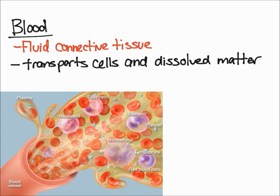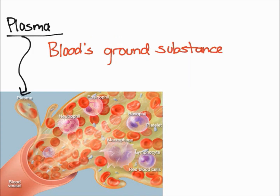First, we're going to talk about plasma. In the diagram, it's the yellow-looking stuff — it's normally a pale yellowish liquid. Plasma is the blood's liquid ground substance, and essentially all of the other components are carried in it, so it's pretty important. It makes up over about 55% of your blood, making it the most abundant component.